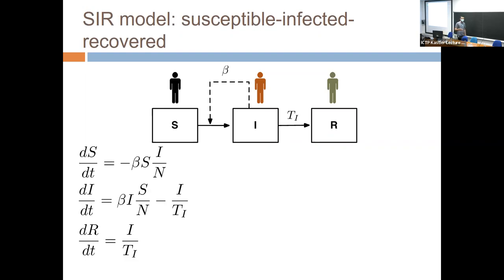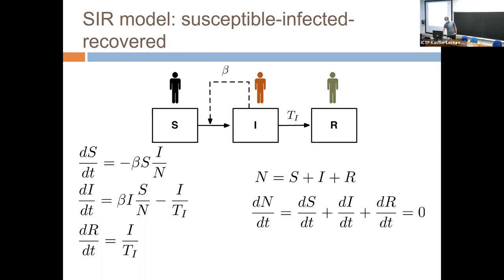We write down a coupled set of nonlinear differential equations: dS/dt is always going down due to infections; dI/dt increases due to new infections and decreases due to recovery; and the recovered class accumulates. Adding these up, we've preserved the total population number — we're ignoring fatalities and births for now — operating on a short epidemic time scale.